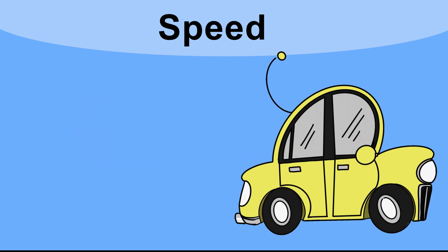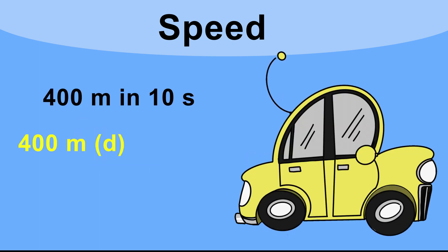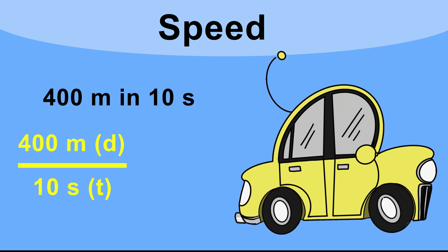So a car traveled 400 meters in 10 seconds. Its speed would be 400 meters divided by 10 seconds which equals 40 meters per second.